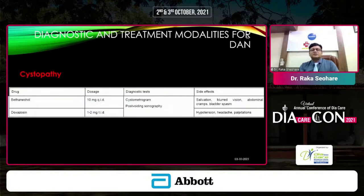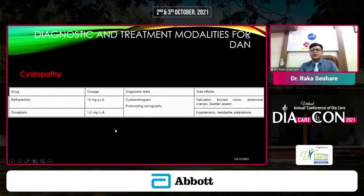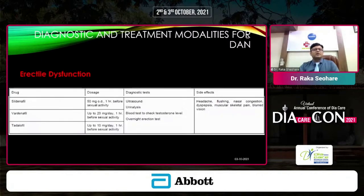Diabetic cystopathy — bladder dysfunction — is very common, with different types of presentation. Diagnostic tests include cystometrogram and post-voiding sonography. Erectile dysfunction is also part of the genitourinary neuropathy presentation, and sildenafil, vardenafil, and tadalafil are used, each with their own side effect profile.